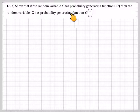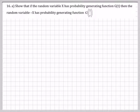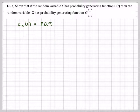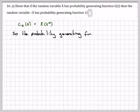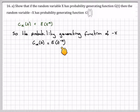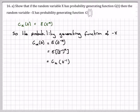Show that if a random variable X has a probability generating function g(t), then the random variable -X has a probability generating function g(1/t). Since g_X(t) = E[t^X], the probability generating function of -X is g_{-X}(t) = E[t^{-X}] = E[(t^{-1})^X] = g_X(t^{-1}), by definition.